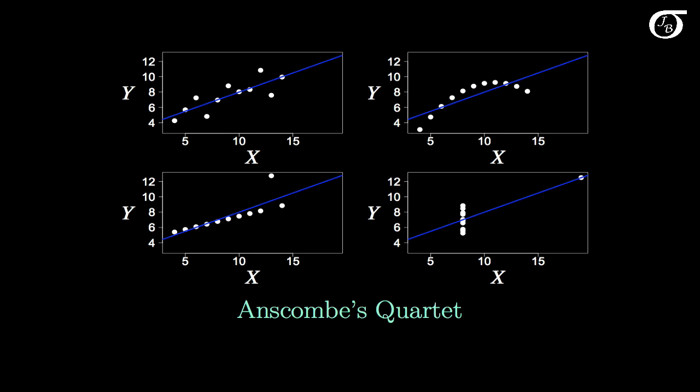They have the same mean of x, same variance of x, same mean of y, same variance of y, same correlation, same slope of the line, same intercept of the line. So the summary statistics for all of these different data sets are the same, but the overall picture is quite different.